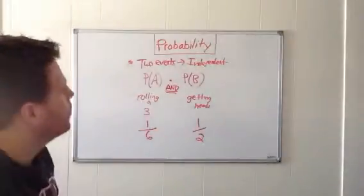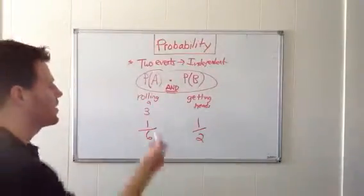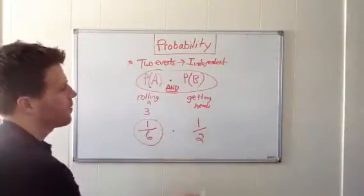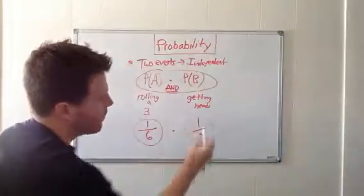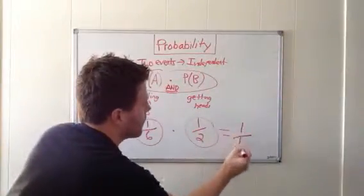So all we have to do using this formula here is multiply the probability of event A, which is one-sixth, multiplied by the probability of event B, which is one-half. And our answer is one-twelfth. That's